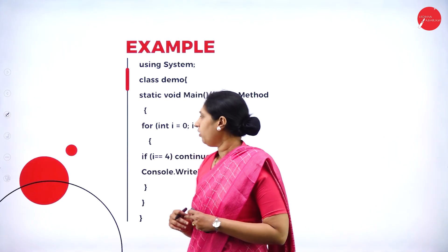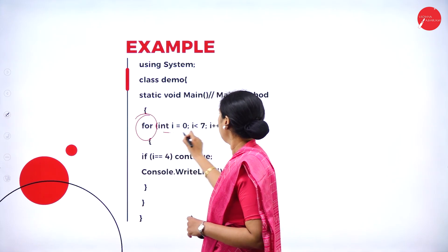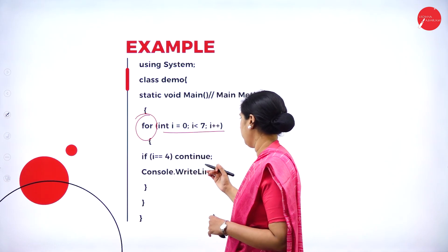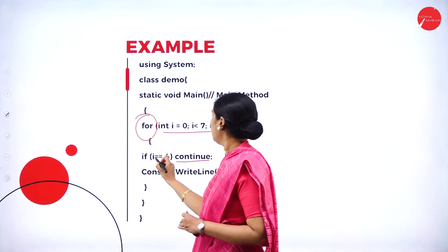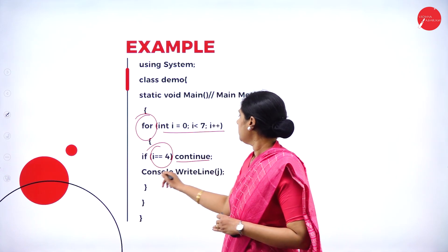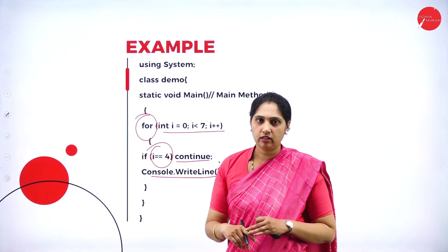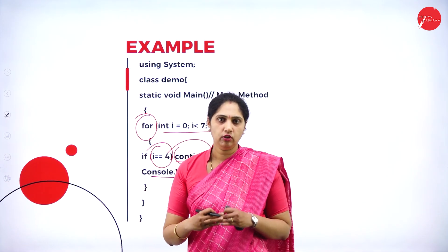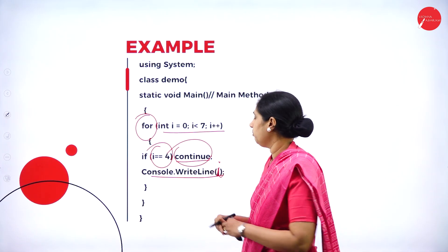In the continue example, we use a for loop. i is initialized to 0, condition is i less than 7. When i equals 4, we say continue. Then there is a console.writeline statement printing i each time. So continue skips the print for i=4 — we check the condition and call the continue statement.